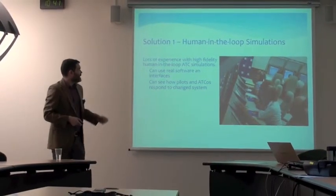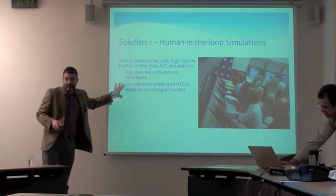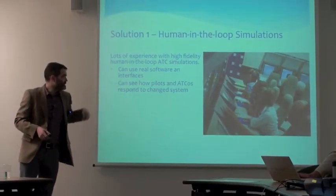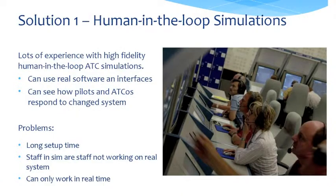The classic approach is a human-in-the-loop simulation. You can use real software interfaces and see how people react to the system, but you've got obvious problems: long setup time, high running costs, and crucially it can only work in real time, which limits the volume of possibilities you can get through. As a system becomes very complex it has an enormous state space with a great many possible paths, and you will not be able to explore many of them in this kind of labor-intensive simulation.